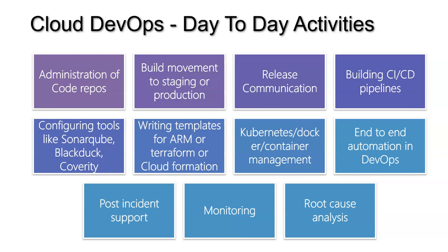Build movement to staging or production is another responsibility. Any build moving from dev to QA, QA to pre-prod, or hot fixes — all those things can be automated. Sometimes a few organizations prefer to have a manual trigger from QA to pre-prod or staging to production rather than an automatic trigger. That's where the DevOps engineer also gets involved to move the code from one environment to the other.